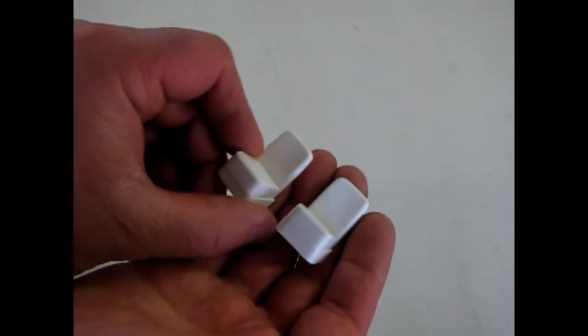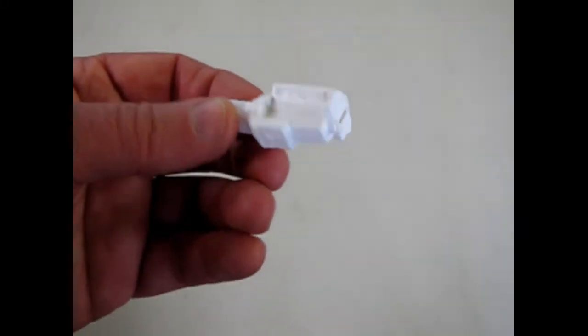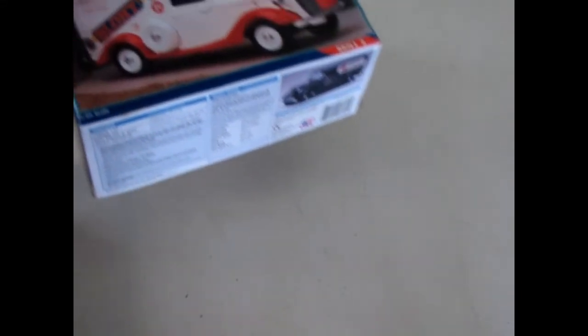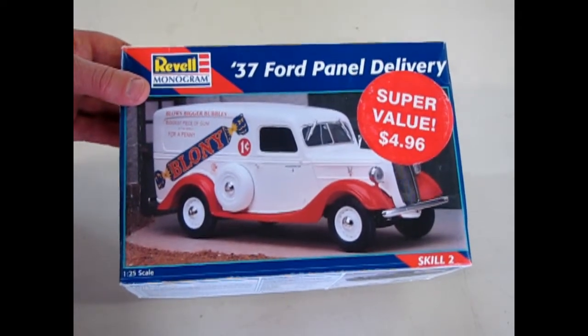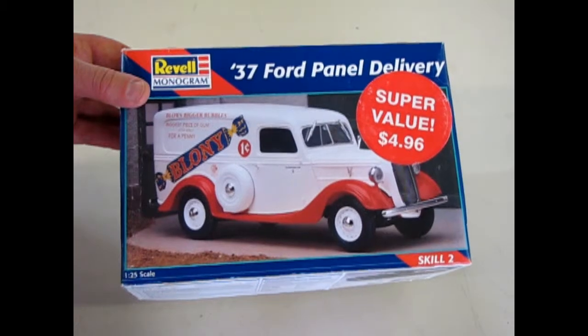And finally the seats. Little jump seats. And it looks like someone started to glue the engine together. Which is kind of a surprise to me because I don't remember doing that. And that the part that fell on the floor is the bottom of the van. But that is our examination of the 37 Ford panel delivery. Super Value $4.96.